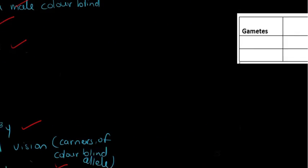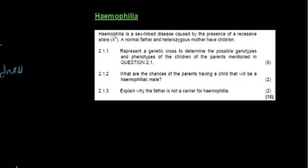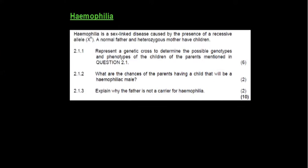That is an example of a question that was asked in the exam. Let's look at a hemophilia question that has previously been asked so we can get some clarity. Hemophilia is a sex-linked disease. Immediately you see XX and XY for female and male, caused by the presence of a recessive allele.